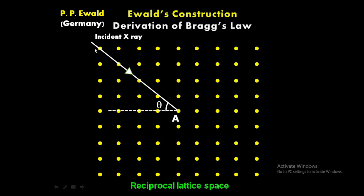Suppose these x-rays are making angle theta with reference to the parallel plane. The green arrow is showing the direction of the incident x-ray, also known as the wave vector. Suppose it has length 1/λ, because we know that the wave vector k is inversely proportional to the wavelength. If point O is the reference origin, the length of vector AO — the wave vector — is 1/λ.